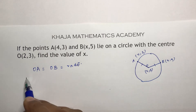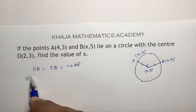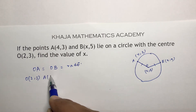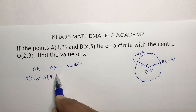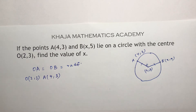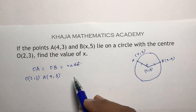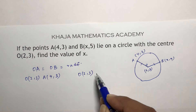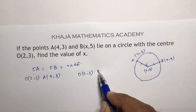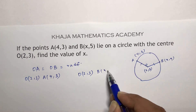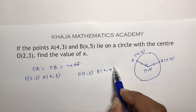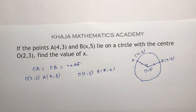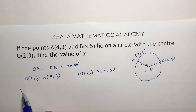O is (2, 3) and A is (4, 3). Next, O is (2, 3) and B is (x, 5). Now we calculate the OA and OB distances using the distance formula.